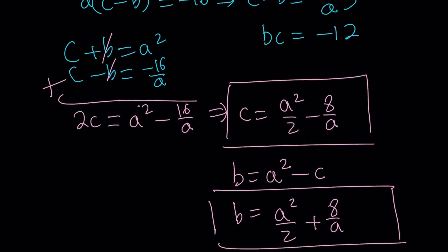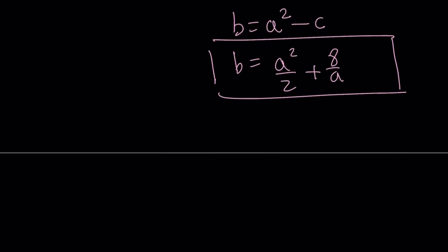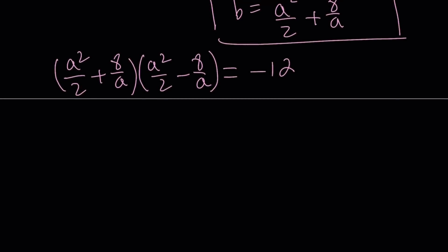We also know that bc is negative 12. So we can go ahead and multiply these two expressions now and set the result equal to negative 12. So you have a squared over 2 plus 8 over a, multiply by a squared over 2 minus 8 over a, and this is equal to negative 12. Notice that these two terms will make a difference of two squares because they're conjugates. So we can write this as a to the fourth power divided by 4 minus 64 over a squared equals negative 12.